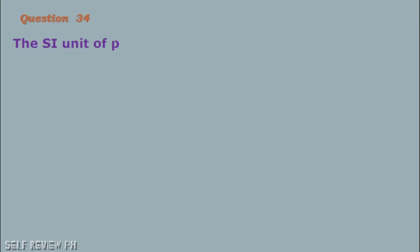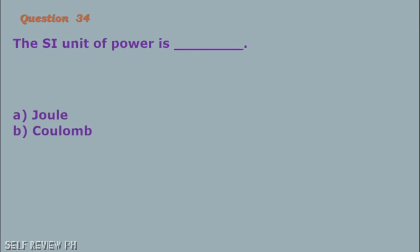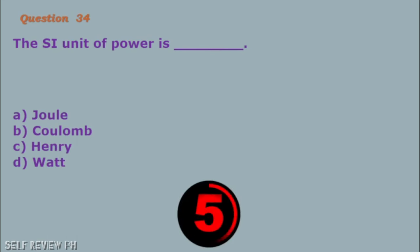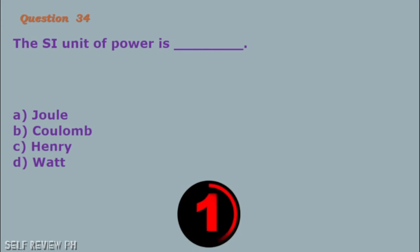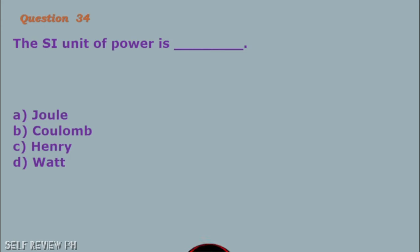Question number 34: The SI unit of power is blank. A. Joule B. Coulomb C. Henry D. Watt. The correct answer is letter D, Watt.